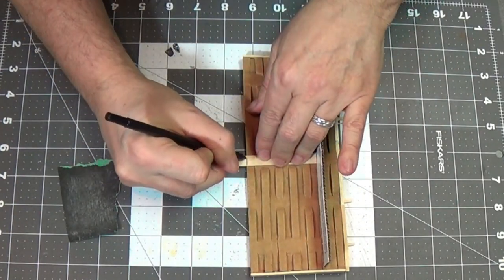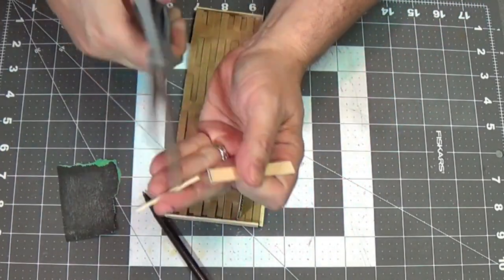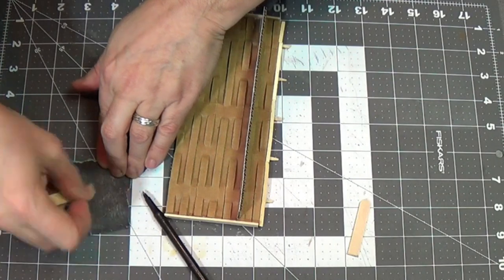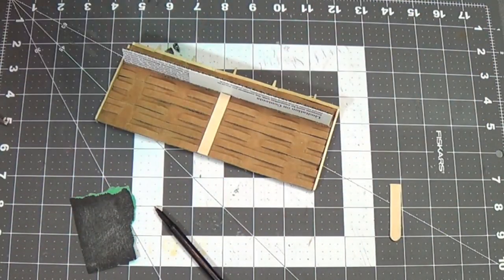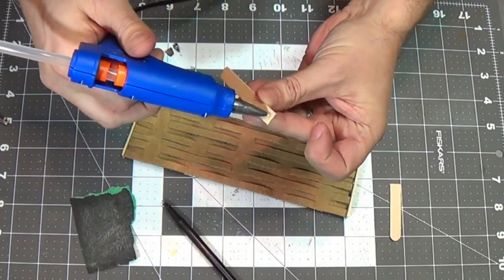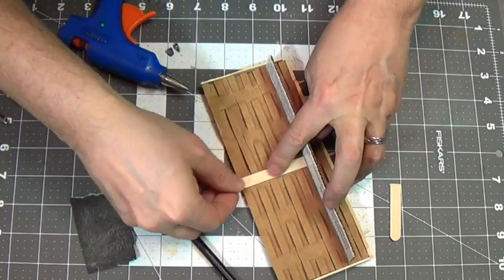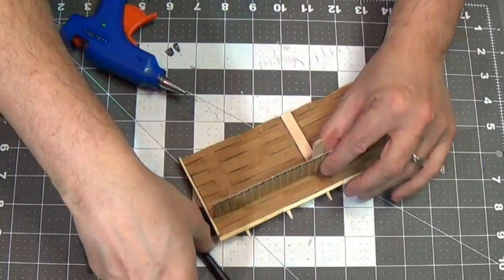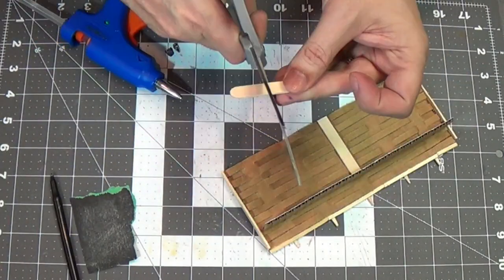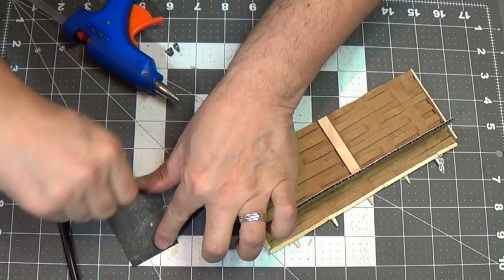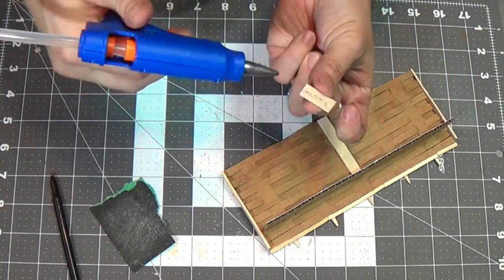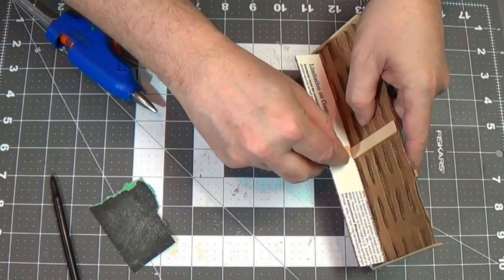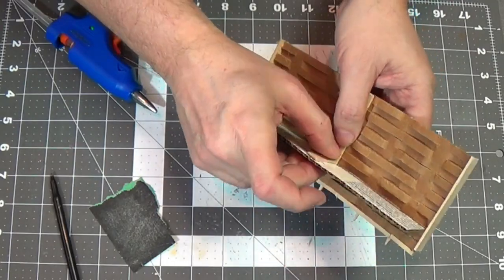Now I'm using a popsicle stick here. I'm going to kind of strengthen the back, as well as strengthen the walkway. So I'll put that up the middle, and then just measure the rest of the popsicle stick, cut it off, and then I'm going to glue that to the other one. So that'll be a nice detail, but also strengthen the walkway to hold it up better.